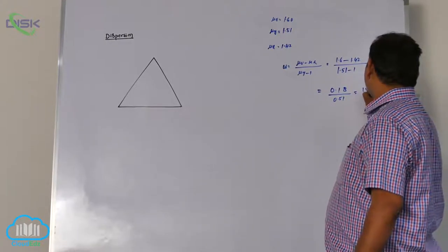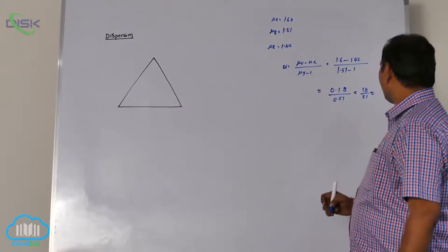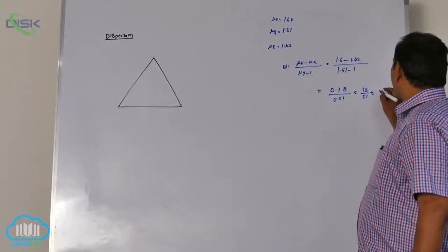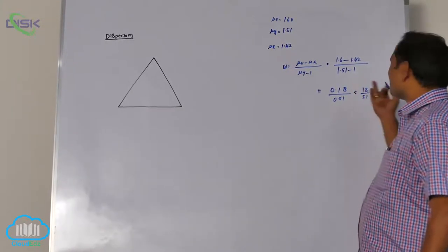So roughly I am going to say like this, 18 by 51 is nearly 0.34 or 0.35 like that. Dispersive power, you can do it, it's not a big issue.